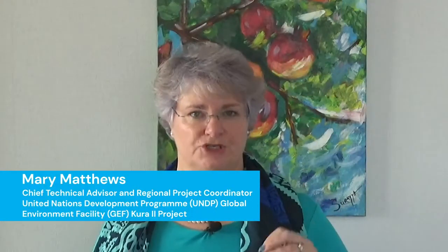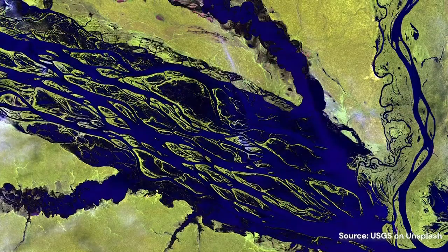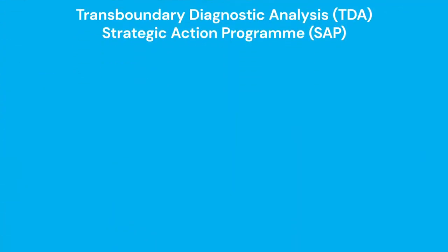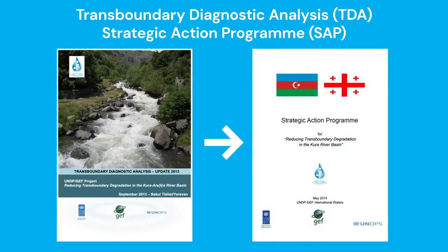Transboundary water issues with fresh waters are a little different from those of marine ecosystems. These include lakes, aquifers, and rivers that flow across political boundaries. In the TDA SAP process, we have the transboundary diagnostic analysis, which is the scientific analysis of the issues, and the strategic action plan or strategic action program process, which focuses more on the political side and how those issues from the transboundary diagnostic analysis are going to be used and addressed by the countries together.